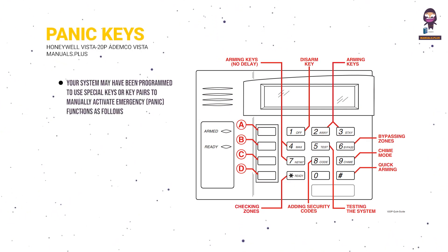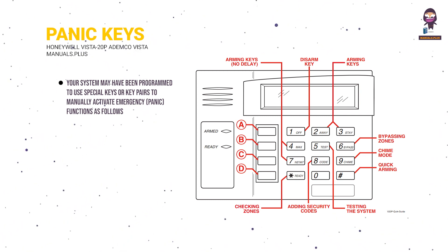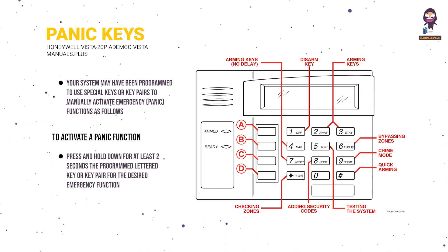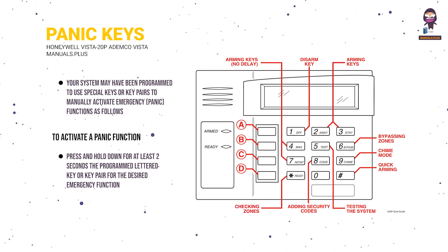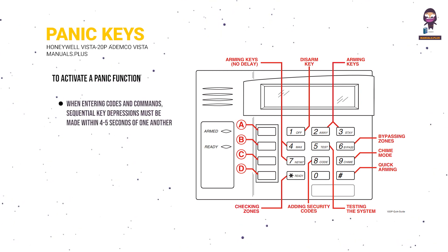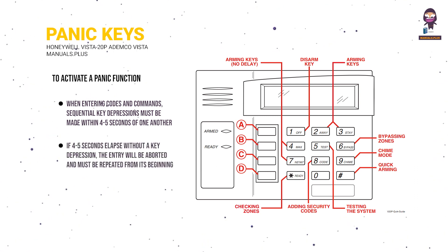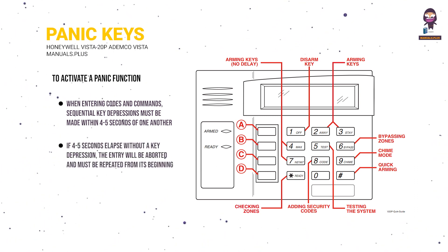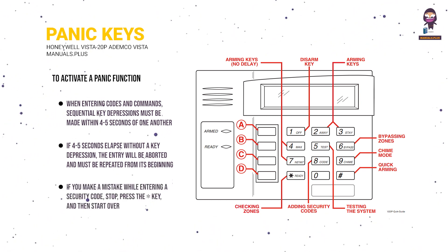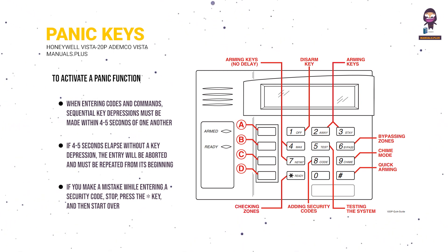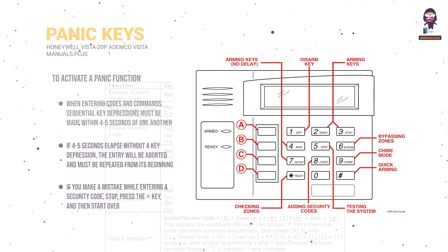Panic keys. Your system may have been programmed to use special keys or key pairs to manually activate emergency panic functions. To activate a panic function, press and hold down for at least 2 seconds the programmed lettered key or key pair for the desired emergency function, or press both keys of the assigned key pair at the same time. When entering codes and commands, sequential key depressions must be made within 4-5 seconds of one another. If 4-5 seconds elapse without a key depression, the entry will be aborted and must be repeated from its beginning. If you make a mistake while entering a security code, stop, press the asterisk key, and then start over. If you stop in the middle while entering a code and then immediately start the entry over, an erroneous code might be entered. Security codes.